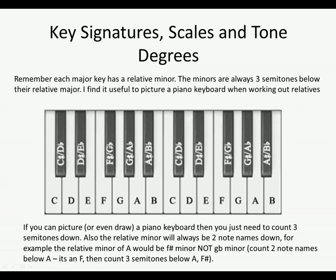The reason I say go down two note names first is important for key signatures. For example, with A major, if we just go down three semitones we land on a black note which is either F sharp or G flat. So first we go down two note names — one, two — we land on F, then we go down three semitones, and we know that is actually F sharp, not G flat. A major has sharps, so G flat wouldn't make sense.